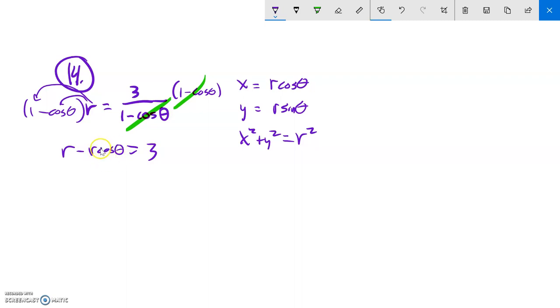So I notice that's just an x. So I'm going to add it to both sides, get this r all alone. And I just added r cosine theta to both sides. And so now this is going to be 3 plus x, I know that, but that r, I really want it to be an r squared.